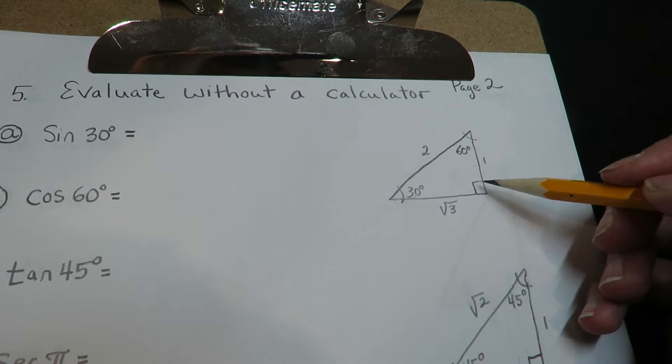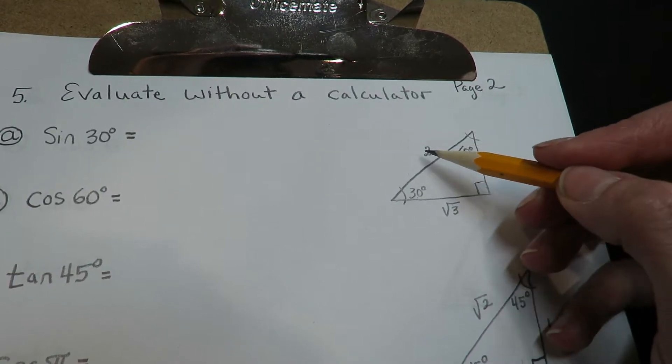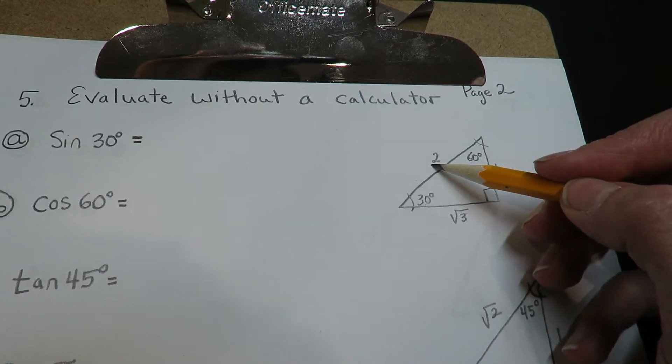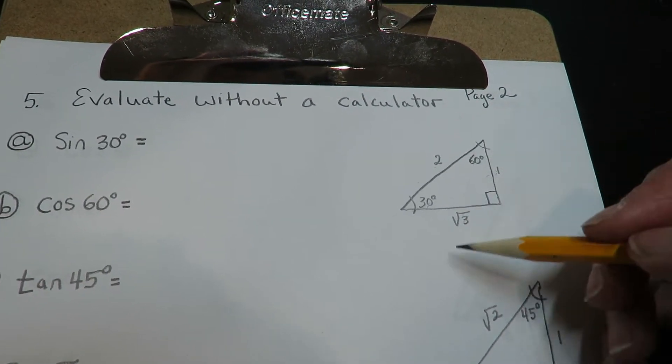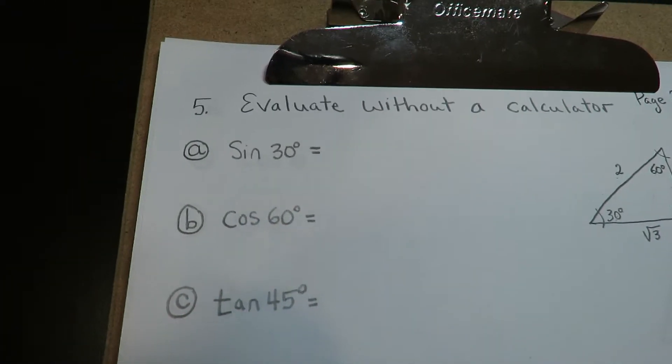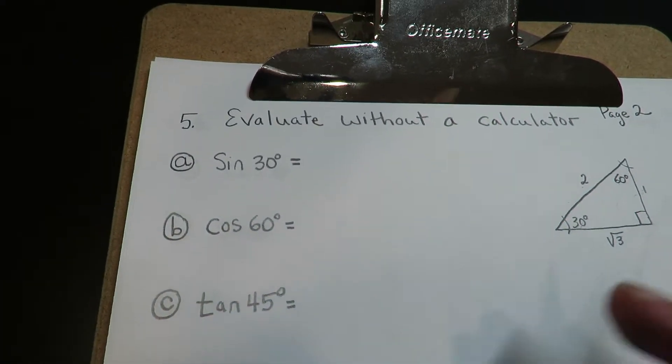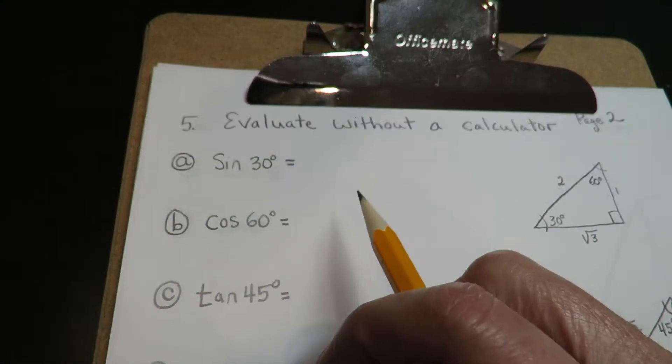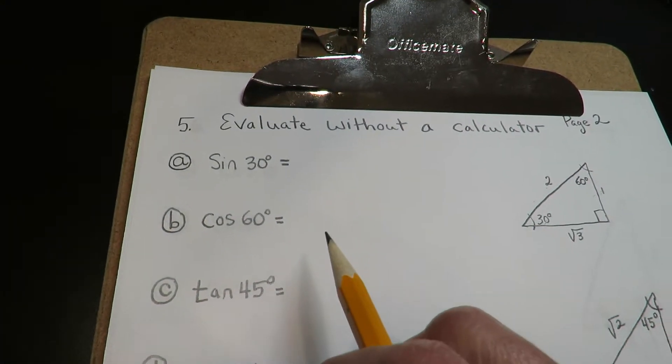When you're across from the 90 degree angle, that's always the hypotenuse. The other two sides are called legs. I know you guys watched the lecture, so you're good on that — I just repeat it to help you.